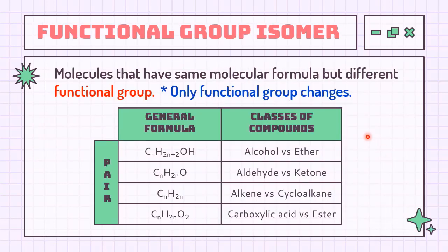In functional group isomerism, these isomers contain different functional groups — they belong to different families of compounds. There are only 4 pairs of functional groups capable of forming this type of isomers: the first pair is between alcohol and ether; the second belongs to aldehyde and ketone; the third belongs to alkene and cycloalkane; and the last pair belongs to carboxylic acid and ester.